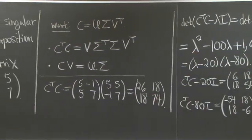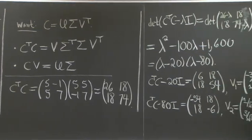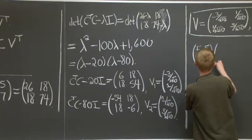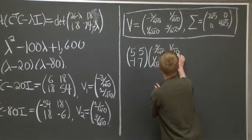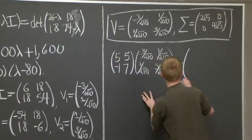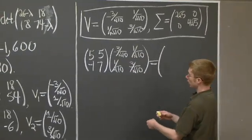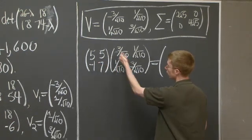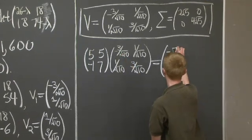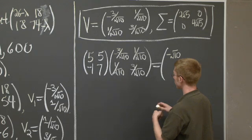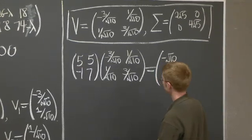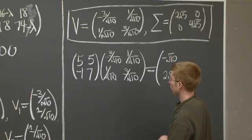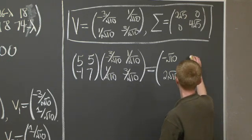And for that, I need to use this second equation right here. So I need to multiply C times V. C is 5, 5, negative 1, 7. Let's multiply it by V, negative 3 over root 10, 1 over root 10, 1 over root 10, 3 over square root of 10. What do we get? Well, I'll let you work out the details, but you get negative 10 over root 10, which is just negative square root of 10 here. Then I just get 2 square root of 10.